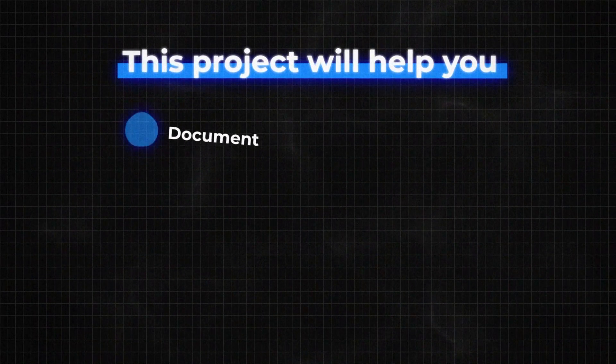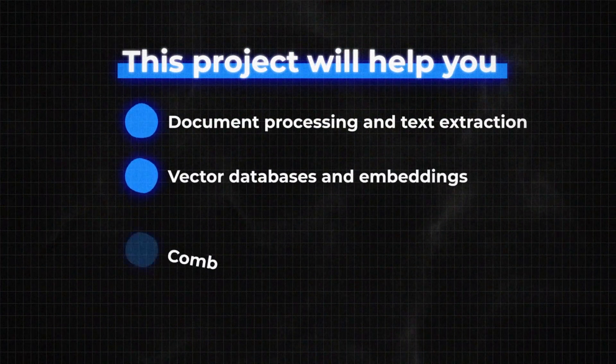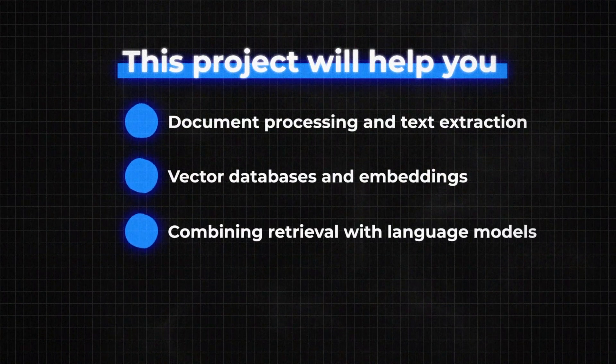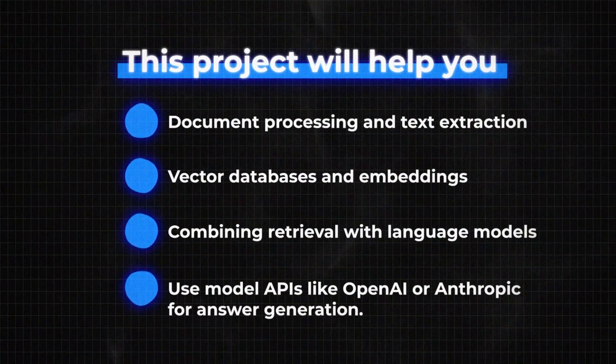This project will help you learn about document processing and text extraction, vector databases and text embeddings, and combining retrieval with large language models using APIs from providers like OpenAI or Anthropic for generating answers. You'll also learn about the real-world challenges of building a RAG system — for example, PDF documents often have complex layouts with tables and sections that are not easy to parse correctly, requiring more advanced document processing techniques. I recently posted an in-depth RAG project tutorial on my channel, so you can check it out here.